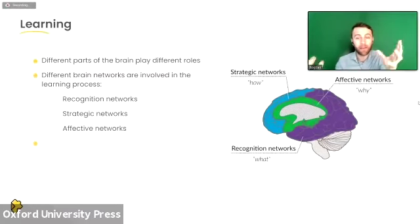What are the three main principles of the UDL framework? When we bring universal design and learning together, there are three pillars: the main idea is to provide students multiple means of engagement, multiple means of representation, and multiple means of action and expression. Let's dive deeper into each one.